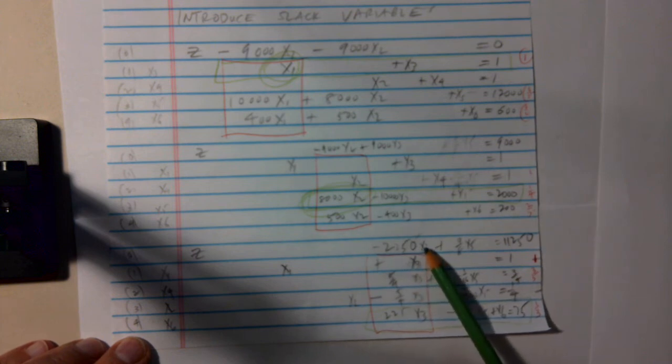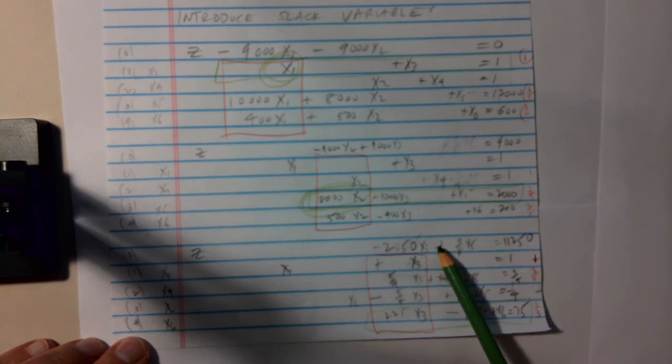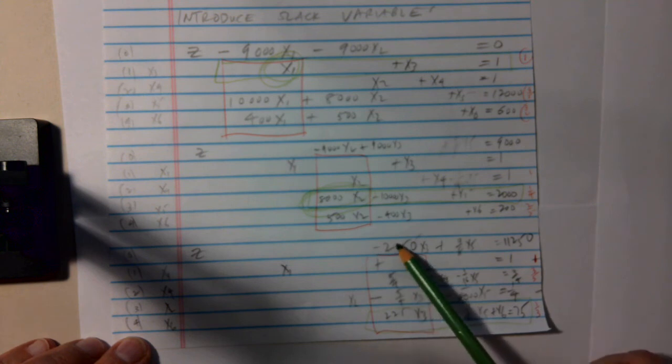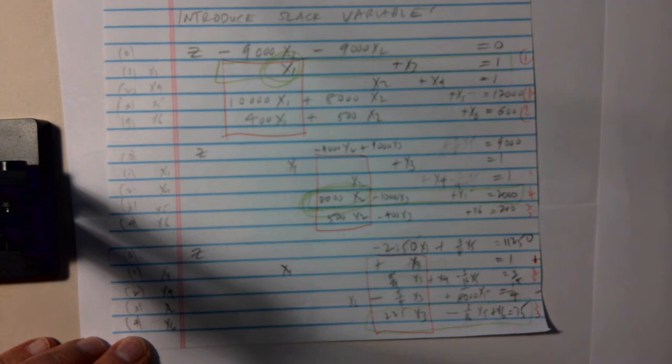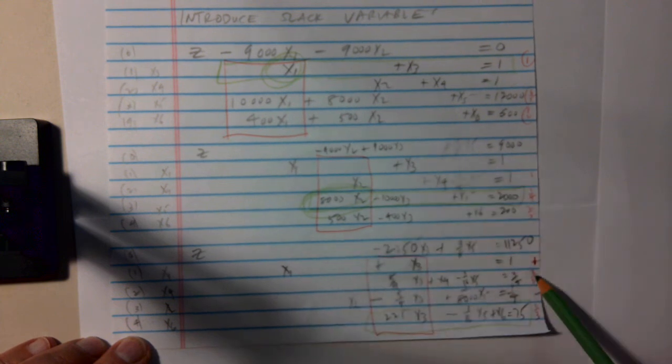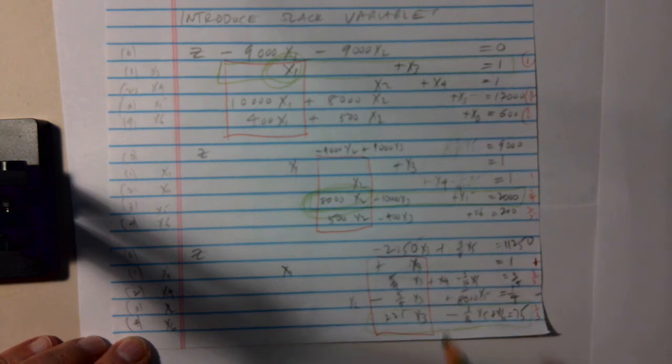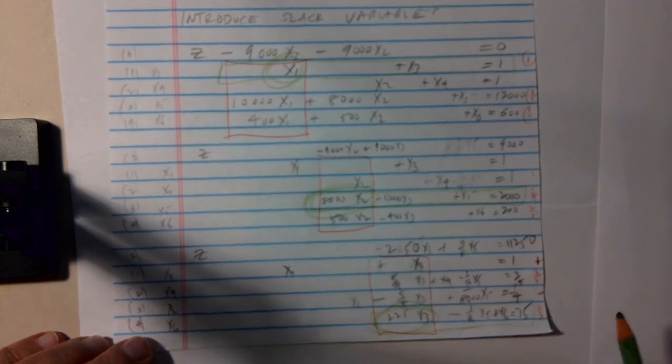But I look at this equation corresponding to Z, and there still is a negative coefficient. That means if I increase X3 as much as I can, still maintaining all the constraints, I'll increase Z. So, I look at this column, and again, I look at the ratio of the right-hand side to the coefficient of X3 in the cases where that coefficient is positive. 1 over 1 is 1, 3 fourths over 5 fourths is 3 fifths. This is negative, so I don't do anything to that. 75 over 225 is a third. The smallest of these three red numbers is a third. So, this is, I put a green box around that. And now, this is my pivot position.